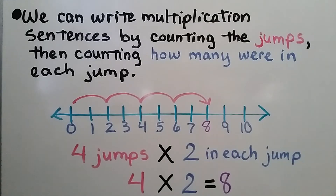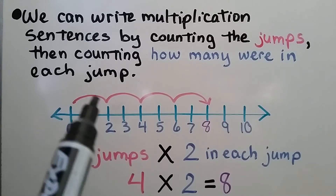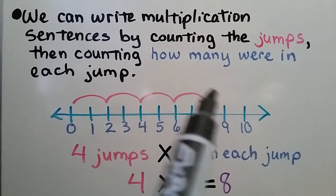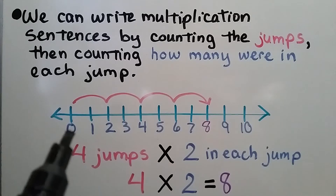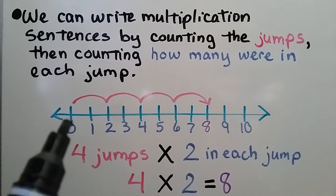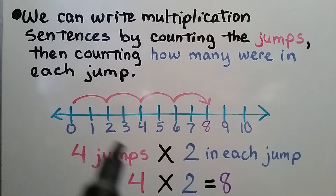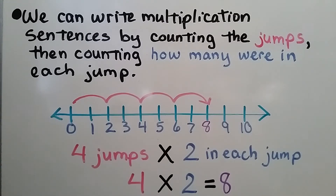We can write multiplication sentences by counting the jumps, then counting how many were in each jump. Here we have one, two, three, four jumps. So we're going to have a four, and it's jumping by two. Four jumps times two in each jump — four times two is equal to eight.